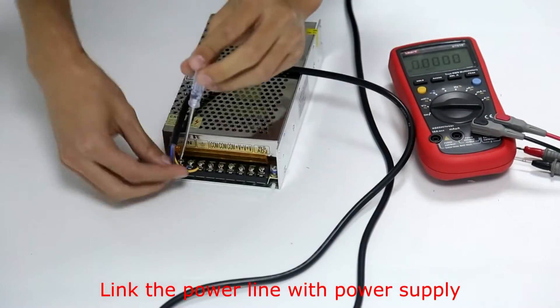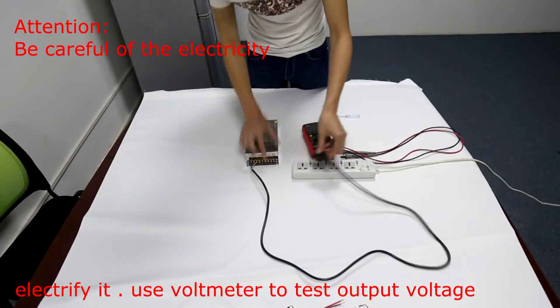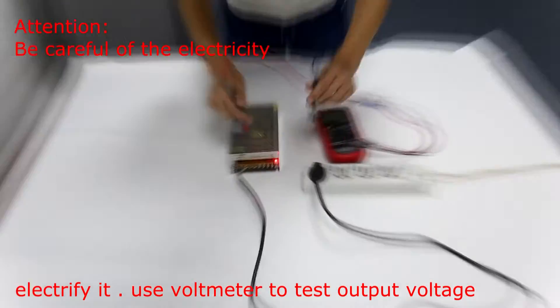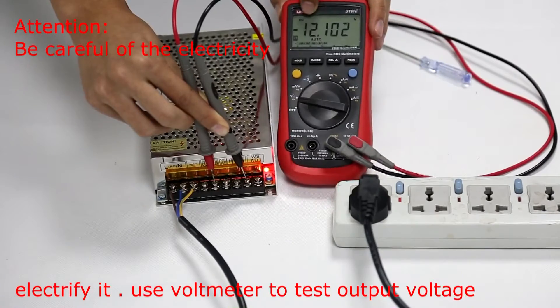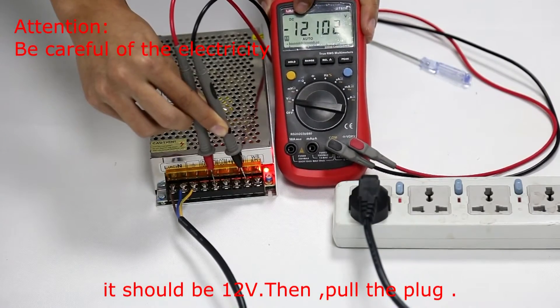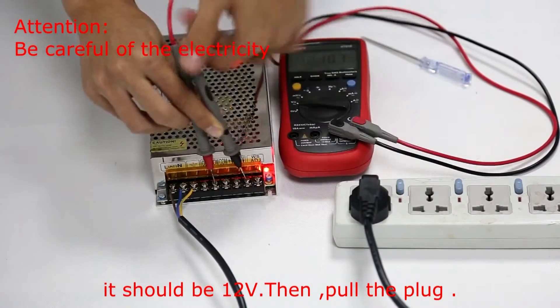Link the power line with power supply. Electrify it. Use a voltmeter to test the output voltage. It should be 12V. Then, pull the plug.